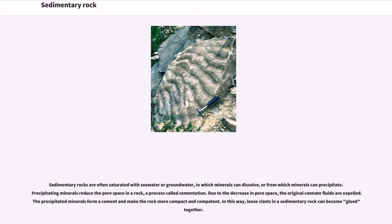Sedimentary rocks are often saturated with seawater or groundwater, in which minerals can dissolve, or from which minerals can precipitate. Precipitating minerals reduce the pore space in a rock, a process called cementation. Due to the decrease in pore space, the original pore fluids are expelled. The precipitated minerals form a cement and make the rock more compact and competent. In this way, loose clasts in a sedimentary rock can become glued together.